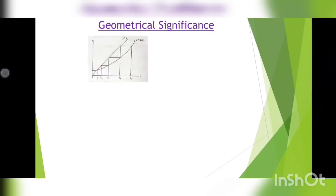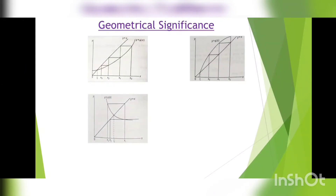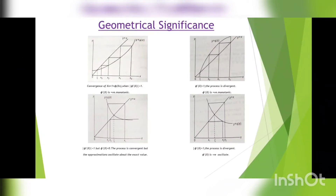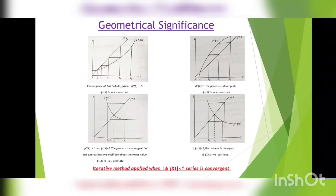Now, let us talk about the convergence criteria for the iteration method. By the iteration method, we get a sequence of xn which converges to the root of the given equation. The lower the value of |φ'(x)|, the fewer the iterations required to get the approximate solution. The rate of convergence is greater if the value of |φ'(x)| is smaller.